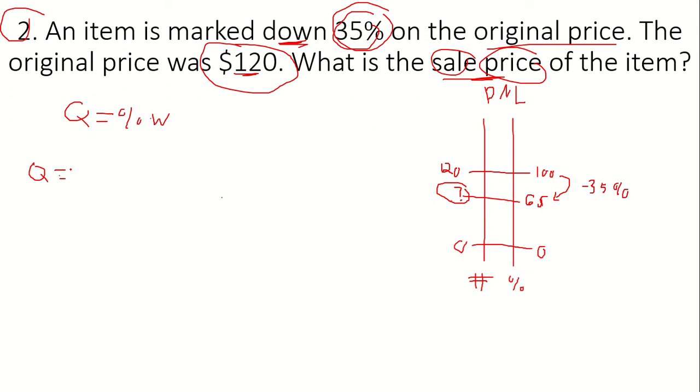In this problem, our quantity is unknown. That's what we're looking for. Our percent is going to equal 65%. And it's 65% because we're paying for 65% of the original price of the item. And our whole is going to be $120.